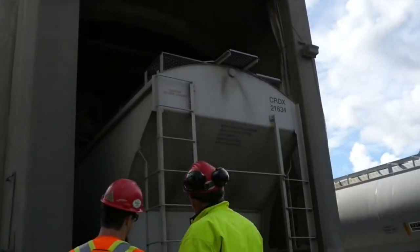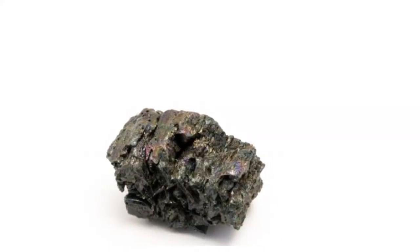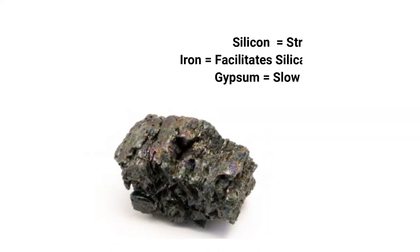Then cement is sent to be used on site or to be stored. If you are wondering about the functions of gypsum and other materials in cement, let us talk briefly about that. Silicon is a component which combines with calcium and other elements to provide the strength of the hardened concrete.